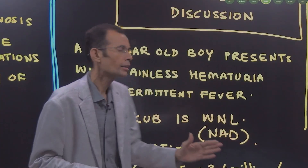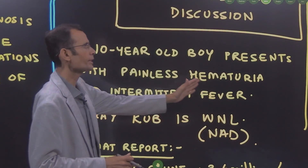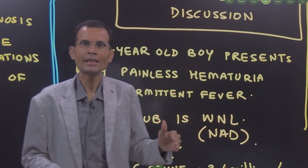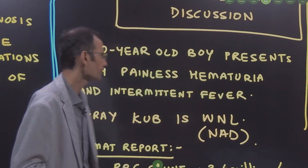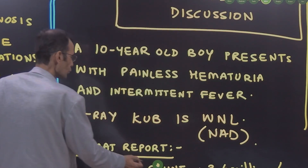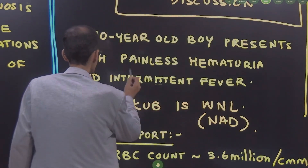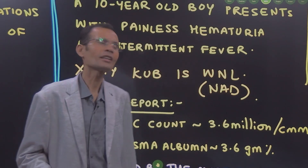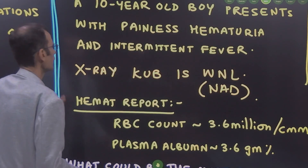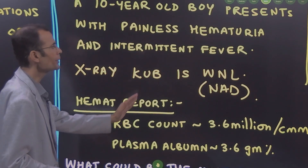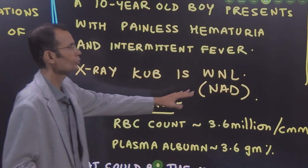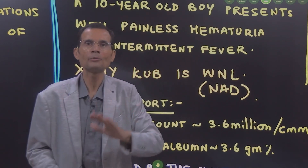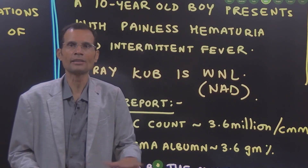Painless hematuria — hematuria means blood in urine. X-ray KUB is normal, within normal limits, no abnormality detected.